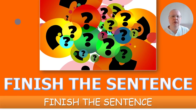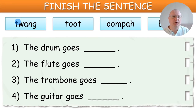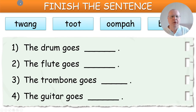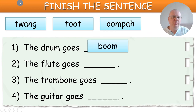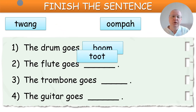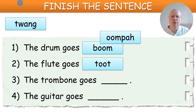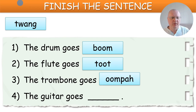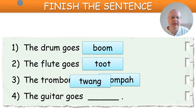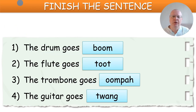Finish the sentence: students need to finish these four sentences. The drums goes boom, the flute goes toot, the trombone goes oompa, and the guitar goes twang. This is good for pronunciation.